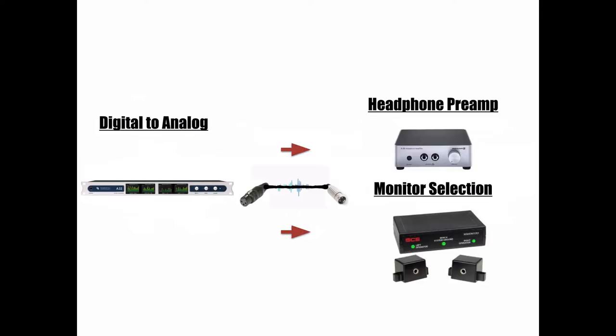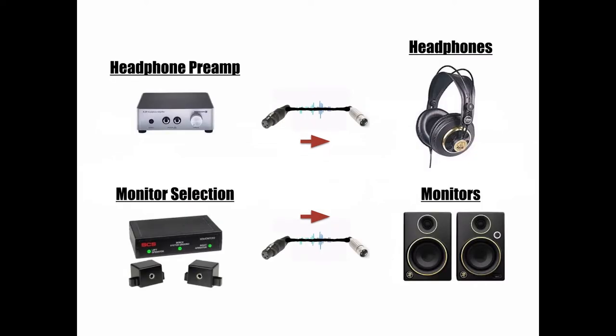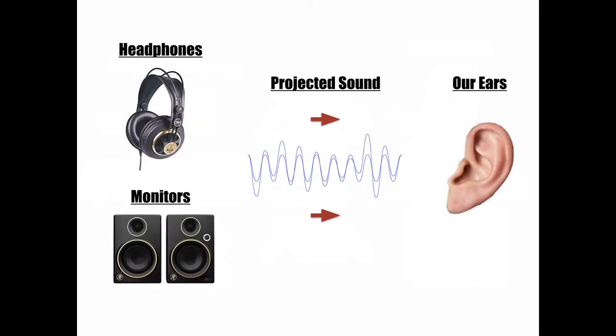From here, the analog voltage signal is either sent to a headphone amp or some type of monitor or monitor selection system. The headphone amp will then send the signal to the headphones for playback, and the monitor selection system will send the voltage signal to the selected set of monitors. In some cases, you will only have one pair of studio monitors, in which case the voltage signal will be sent directly from the D to A converter to the monitors. And finally, you hear the result of the entire signal flow from either your headphones or your studio monitors.